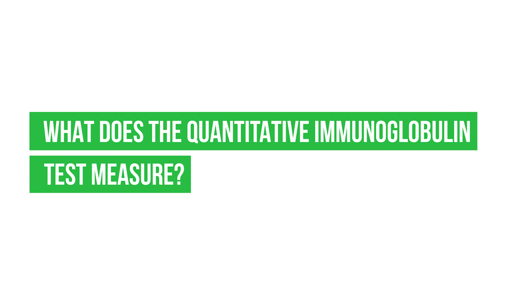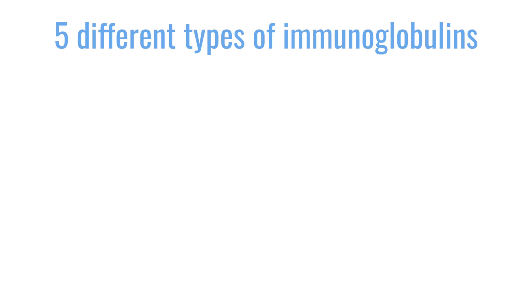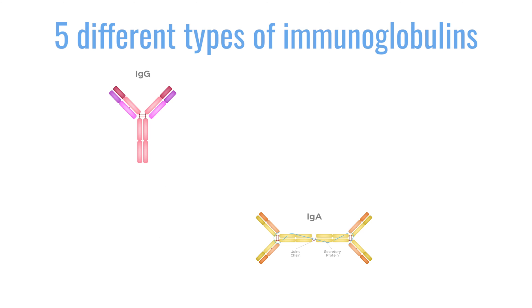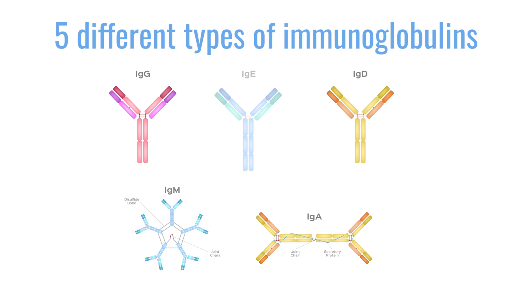What does the quantitative immunoglobulin test measure? In terms of quantitative immunoglobulins, normally people have five different classes of immunoglobulins: IgA, IgG, IgM, IgD, and IgE.